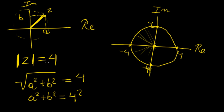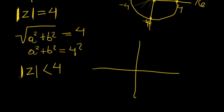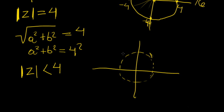What if we're interested in something like the magnitude of z being less than 4? We're going to have the same circle. We remember from plotting regions on the real plane that when you have something less than or greater than some value, you draw a dotted line. Because we're less than 4, anything with radius less than 4 means we shade the region inside.